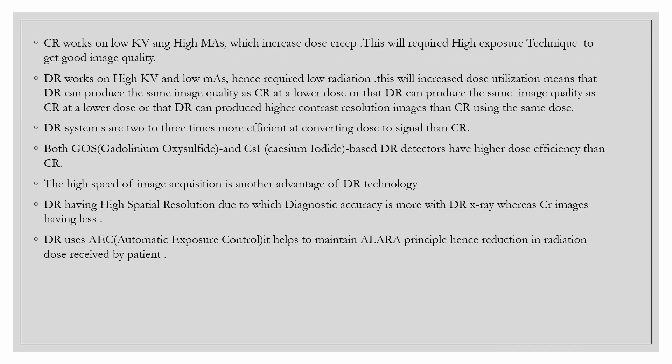In CR, the system works on low kV and high mAs, which increases dose creep and requires high exposure technique to get good image quality. In DR, the system works on high kV and low mAs, hence requiring lower radiation. This increases dose utilization, meaning DR can produce the same image quality as CR at a lower dose.